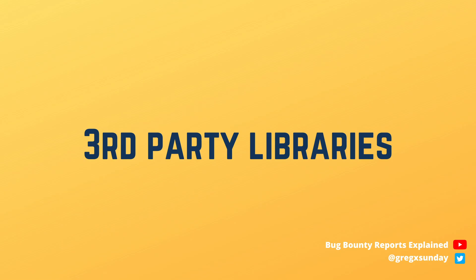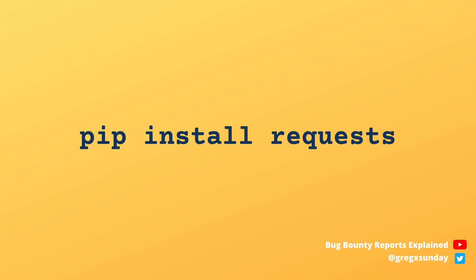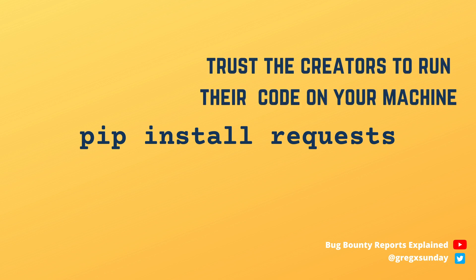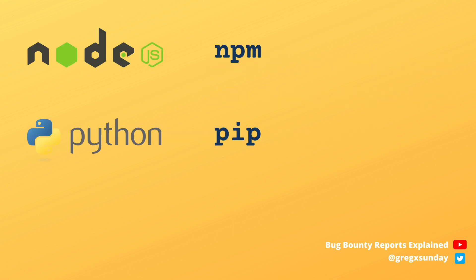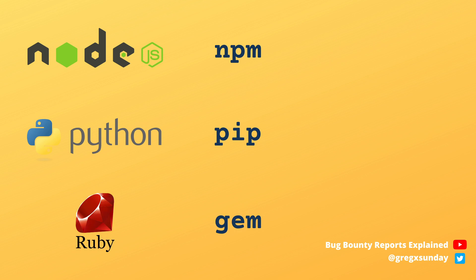When creating applications in any programming language we use many third-party libraries. They are pieces of code written by other users, and to use someone's library we must trust them enough to run their code on our machine or on our server. There are tools that make using other libraries easier, like npm for JavaScript, pip for Python, or gem for Ruby. In my examples I will mostly stick to Python's pip because it's probably what most of us are familiar with.